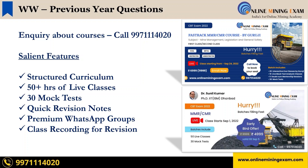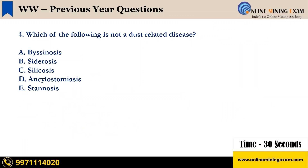Next question: Which of the following is not a dust related disease? A. Byssinosis. B. Siderosis. C. Silicosis. D. Ankylostomiasis. E. Stenosis. Your time starts now.